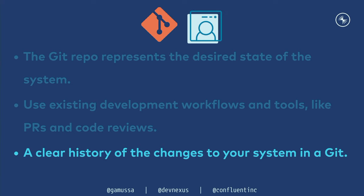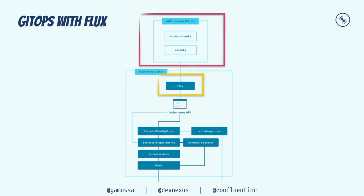Something needs to keep things synchronized in GitOps. In my example, there is a repository with an environments folder and a secrets folder. A small tool deployed in my Kubernetes cluster constantly monitors and watches those folders in the repository, listening for changes that happen in Git. After detecting changes, this operator — Flux CD — runs and keeps things synchronized in the Kubernetes cluster.